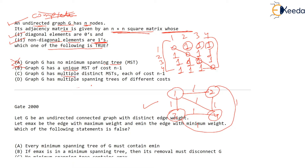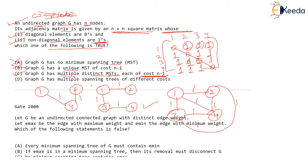Option C: graph G has multiple distinct minimum spanning trees, each of cost n minus one. This is true. You may have the first tree: one to two with cost one, one to three with one, and three to four with one — cost is n minus one, that is three. But another possible tree is one to four with cost one, four to two with cost one, and four to three with cost one. There is no cycle in this tree either. The topologies of the left-hand side tree and right-hand side tree are different — they are different trees.